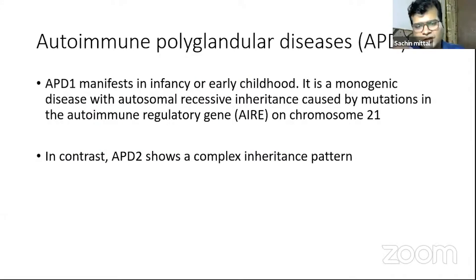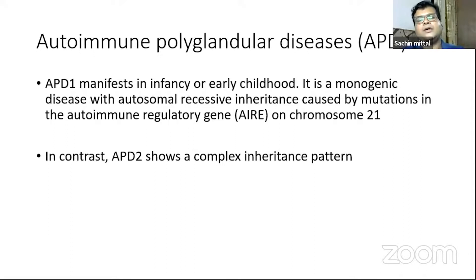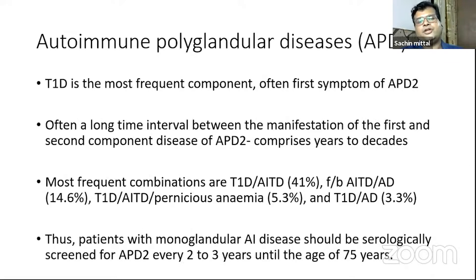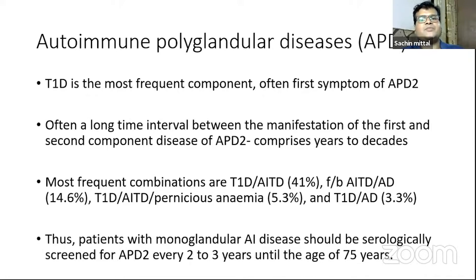Professor Hattersley's group in Exeter has proposed classifying these as juvenile versus adult onset. APS type 1, the monogenic one with autoimmune regulatory gene on chromosome 21, has autosomal recessive inheritance with early presentation and a significant component of mucocutaneous candidiasis. For APS type 2, recent research shows that type 1 diabetes is perhaps the commonest component, with the most frequent combinations being type 1 diabetes with autoimmune thyroid disease, followed by autoimmune thyroid disease with Addison's disease.